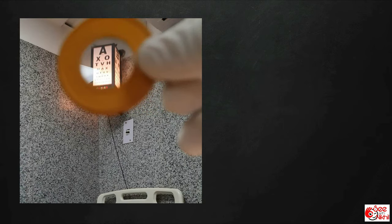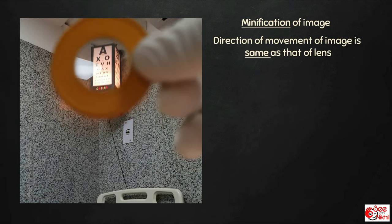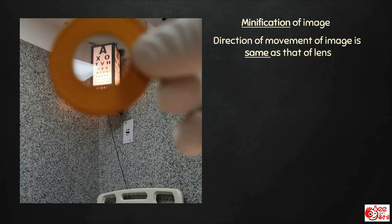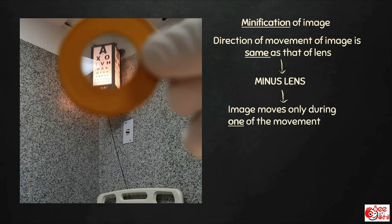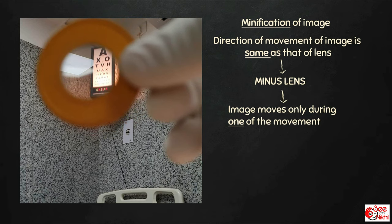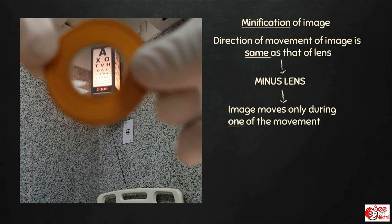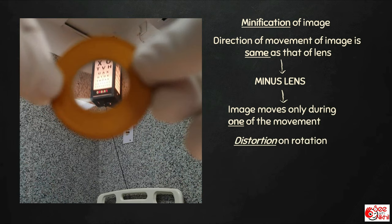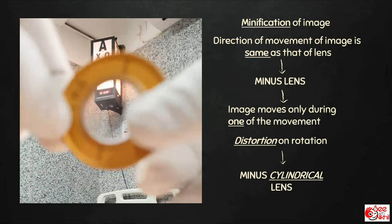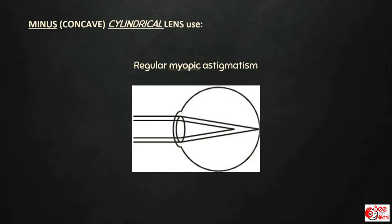Looking at the next lens: there is minification of image and the direction of movement is the same as that of the lens, which means it is a minus lens. The image moves only during vertical movement but not horizontal, and on rotation there is distortion of image, which means it is a minus cylindrical lens. A minus cylinder is used in correction of regular myopic astigmatism.